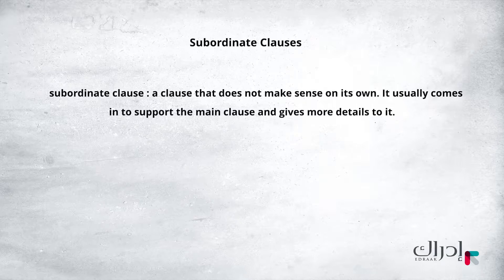To understand this definition, let's look at this simple example: 'Because the cat was hungry, I gave it food.' Can you guess which part of the sentence is the main clause and which one is the subordinate clause? A subordinate clause is a clause that does not make sense on its own — meaning it feels like it's not complete. 'Because the cat was hungry' — then what? What happened? This, as you can guess, is the subordinate clause. It sounds incomplete. 'I gave it food' is the main clause as it gives full meaning.